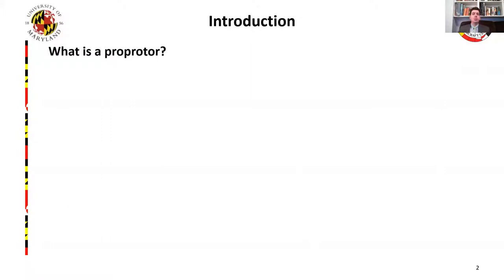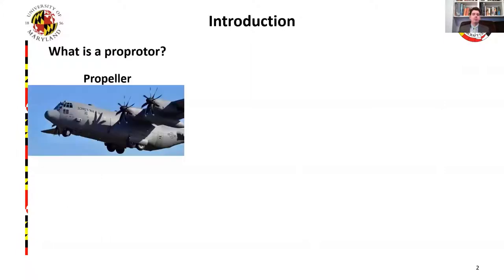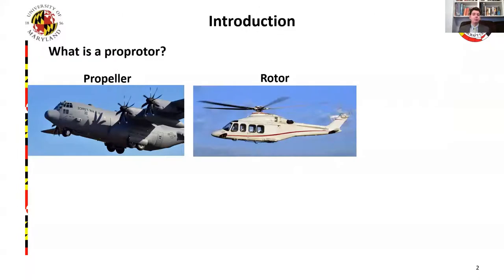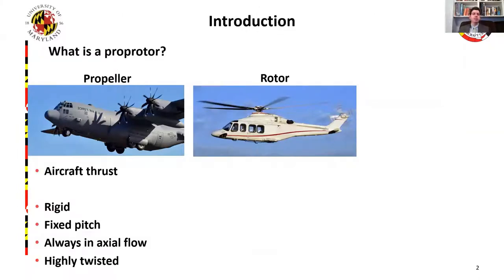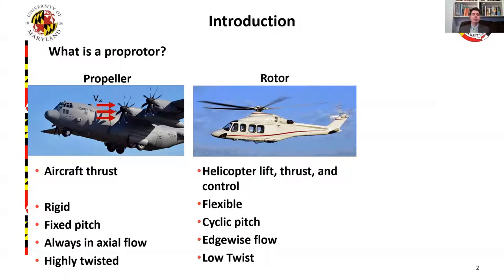The first question to answer is: what is a prop rotor? It's a combination of a propeller and a rotor. A propeller is used to generate thrust for an aircraft and is typically rigid with a fixed pitch. Since it's always in axial flow — that is, the air is moving down onto the disc — a large amount of blade twist is optimal. A rotor, on the other hand, provides lift, thrust, and control over the helicopter. The blades are very flexible and controlled with cyclic oscillations of the pitch. In forward flight, the air blows over the edge of the disc, which leads to a low twist design.